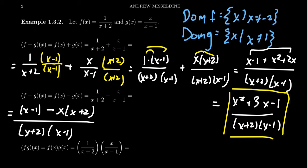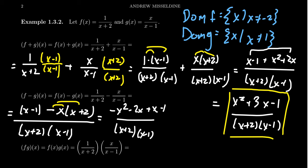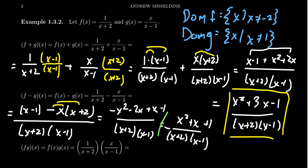Adding and subtracting fractions is really identical — you just have to make sure you have a negative sign and distribute it appropriately. Multiplying the first fraction by (x-1)/(x-1) and the second by (x+2)/(x+2), then distributing the negative, gives a numerator of -x²-2x+x-1, which combines to -x²-x-1, over (x+2)(x-1). Since everything in the numerator is negative, you might consider factoring out the negative sign in front of the fraction.